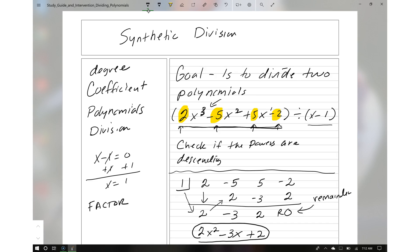So 2x cubed minus 5x squared plus 5x minus 2, this polynomial divided by x minus 1, is equal to 2x squared minus 3x plus 2. And x minus 1 will be a factor of this polynomial since the remainder was 0.